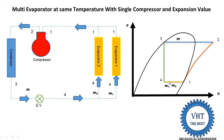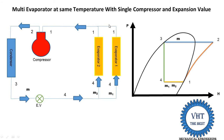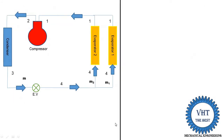The schematic diagram and P-h diagram are now drawn for the system. Next we find out the equations for COP. Using the schematic diagram as reference: m1 is the mass of refrigerant circulated in evaporator 1, m2 in evaporator 2, and m equals m1 plus m2. From the P-h diagram, draw vertical lines from each numbered point and read the enthalpy values h1, h2, h3, h4.